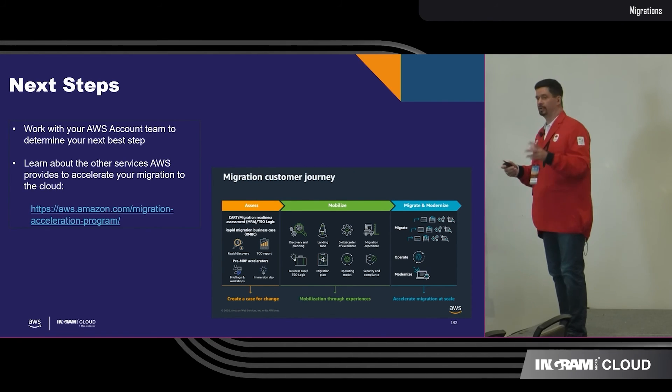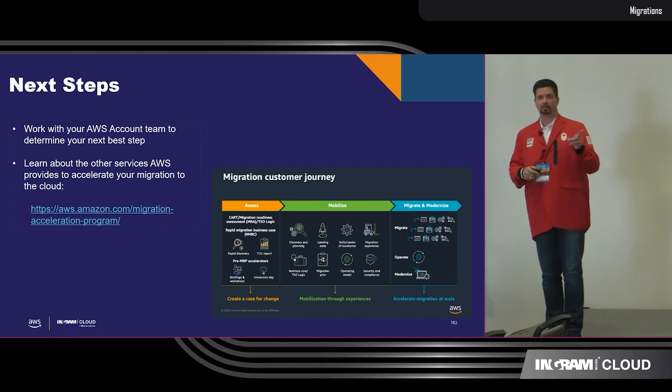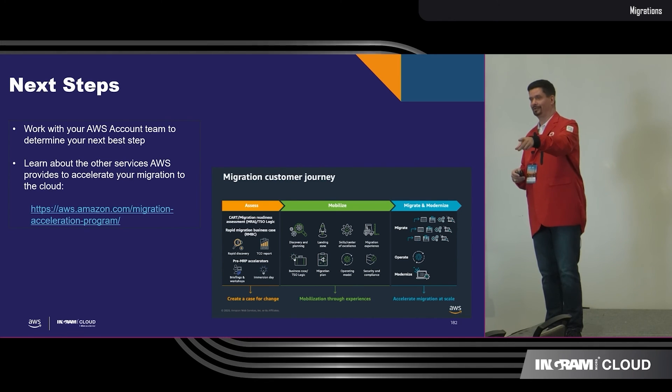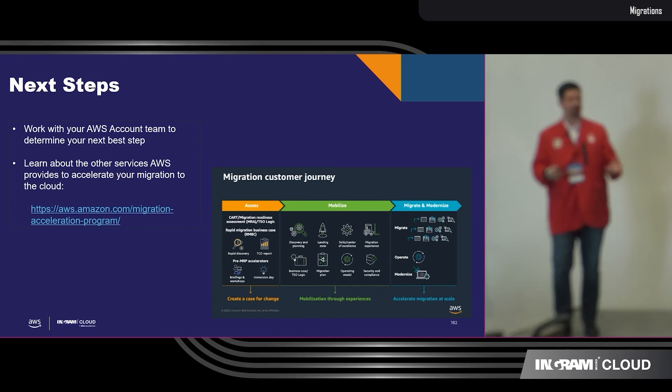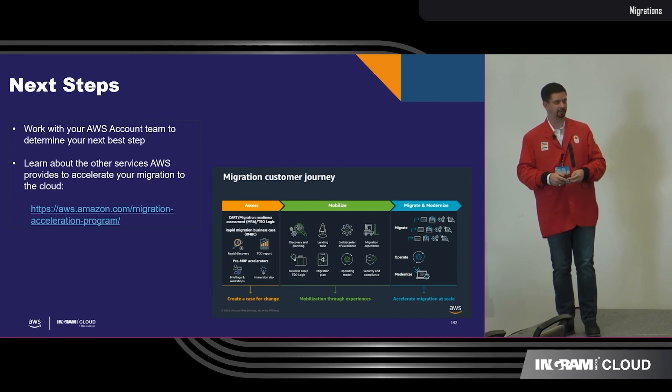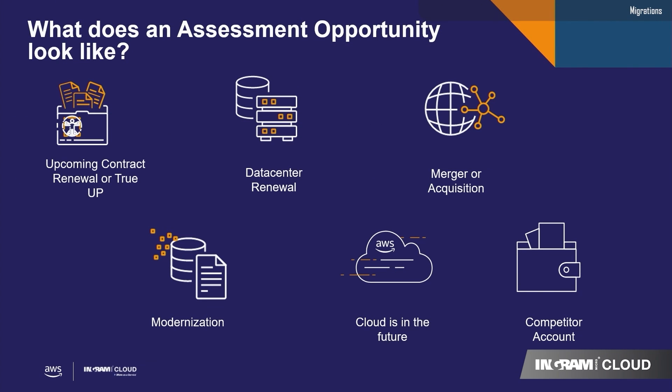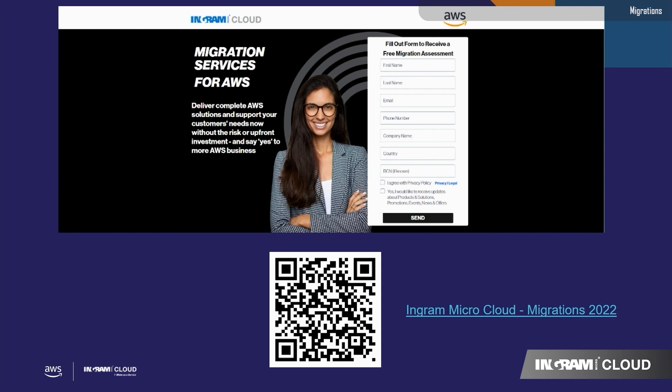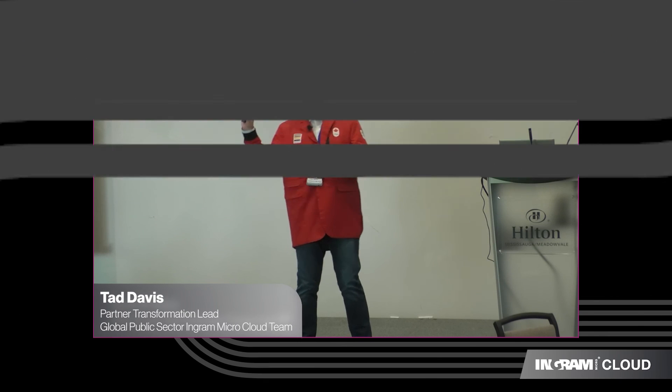Next steps: work with your AWS account team — there's Logan and Ishmael, who can help out with migration evaluator. So what does an assessment opportunity look like? It could be any kind, but especially when you've got upcoming contract renewals around licensing — that's an optimal time. Data centers moving out, companies acquiring companies and combining things, modernization, and competitor accounts are all good triggers. You can scan this QR code to get started.